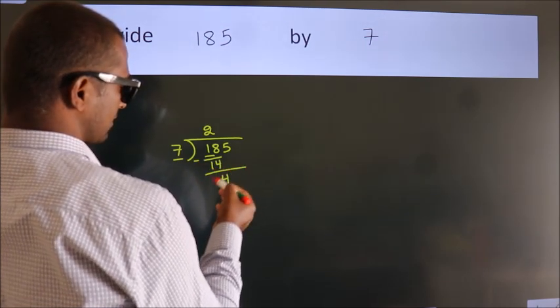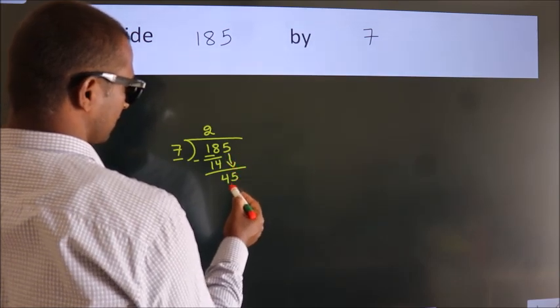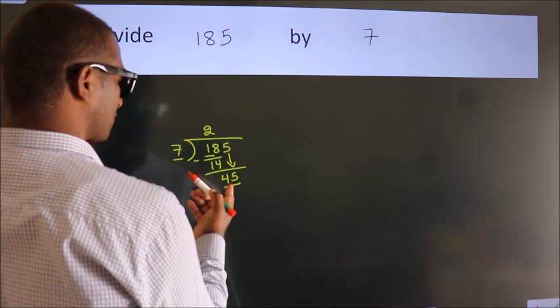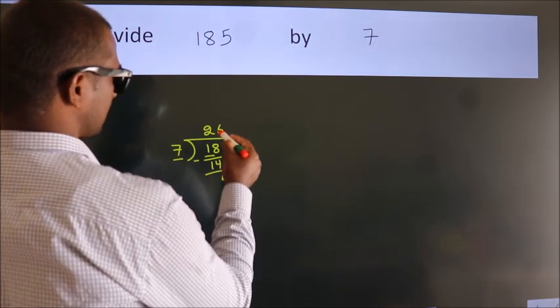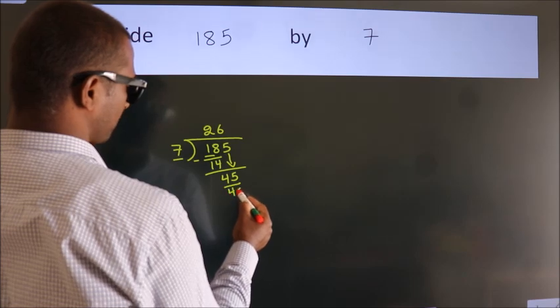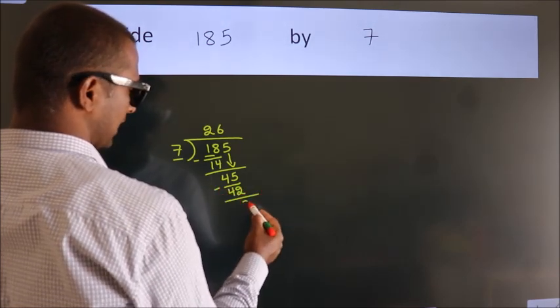After this, bring down the beside number. So 5 down, giving us 45. A number close to 45 in the 7 table is 7 times 6, which is 42. Now we subtract. We get 3.